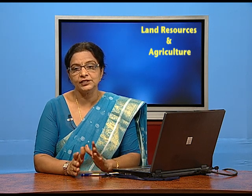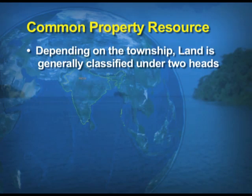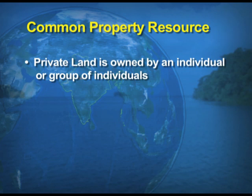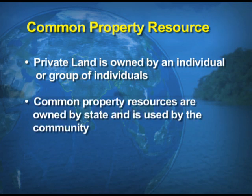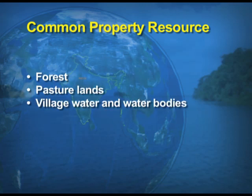What are common property resources? Resources are divided under two heads: private and common property resources. Private resources are owned by an individual or group of individuals. Common property resources are owned by the state and used by the community. Examples are forest land, pasture land, village water, and water bodies, etc.